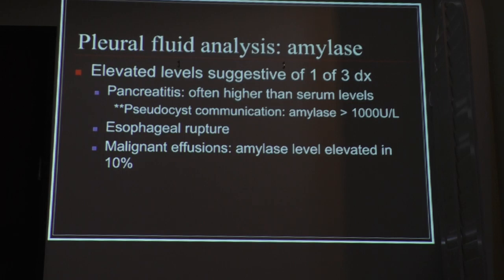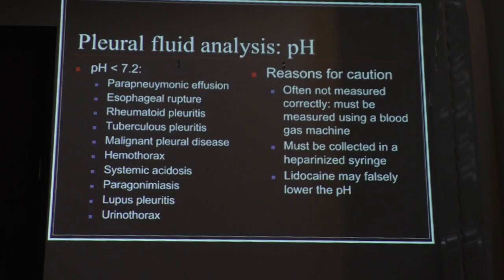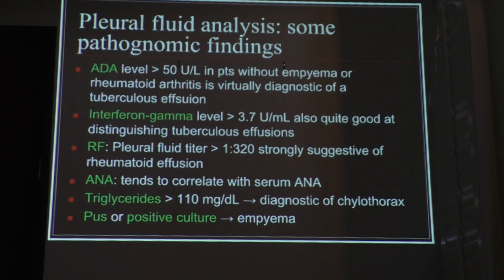For malignant effusions, you order an amylase level — it's elevated in about 10% of patients. For pleural effusion pH analysis, you always think about rheumatoid disease, TB, systemic acidosis, lupus, urinothorax — though that's rarely seen — or the parapneumonic effusions where the pH can be low.